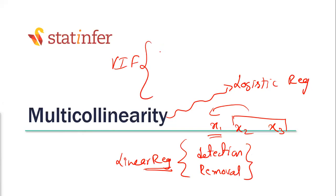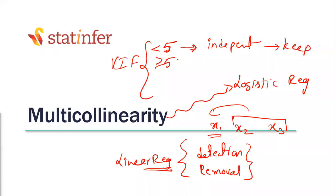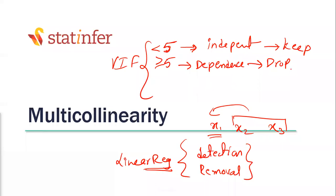What are the VIF limits — the usual general industry standard for detecting multicollinearity? If VIF is less than five, that is an indication of independence — no dependence; we keep such variables. If VIF is greater than or equal to five, that shows there is some dependence — drop such variables. But can you drop all variables with VIF more than five at once? No — drop carefully, one by one, sequentially. Do not confuse VIF five with p-value 0.05.